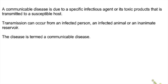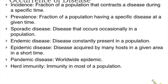A communicable disease is caused by a specific infectious agent or its toxic products. Transmission can occur from an infected person, an infected animal, or an inanimate reservoir — for example, borrowing underwear could transmit pubic lice. When a disease can be transmitted this way, it is termed a communicable disease.